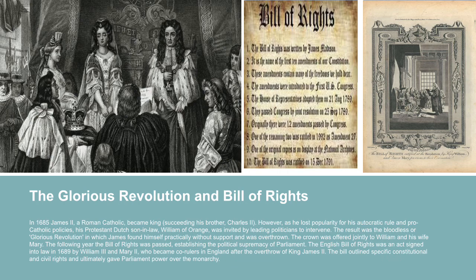However, as James II lost popularity for his pro-Catholic policies, his Protestant Dutch son-in-law, William of Orange, was invited by leading politicians to intervene. The result was the bloodless, or Glorious, Revolution in which James found himself practically without support and was overthrown. The crown was offered jointly to William and his wife Mary. The following year, the Bill of Rights was passed, establishing the political supremacy of Parliament.